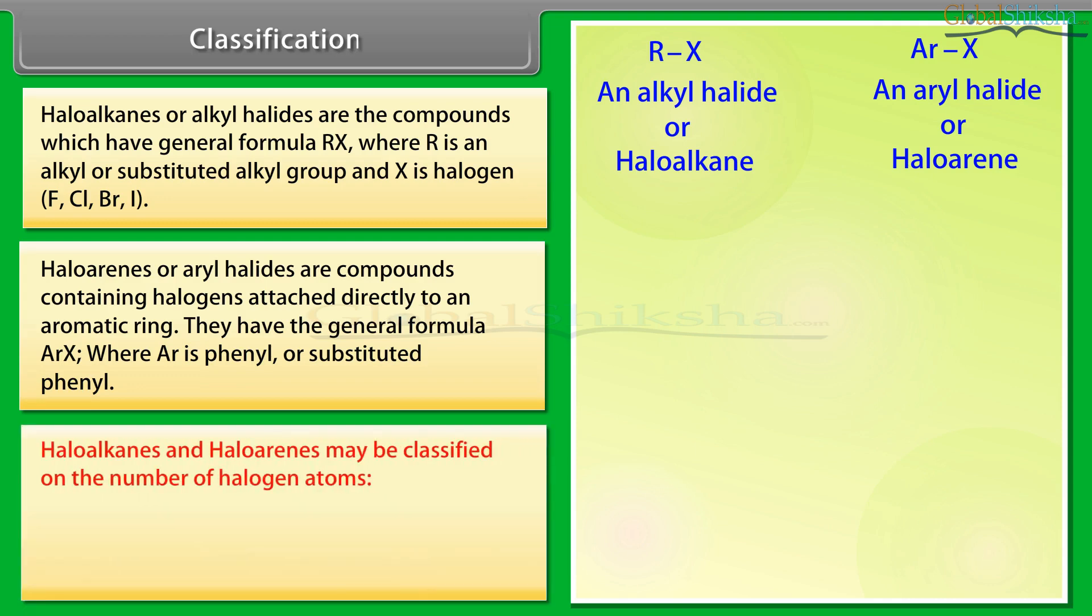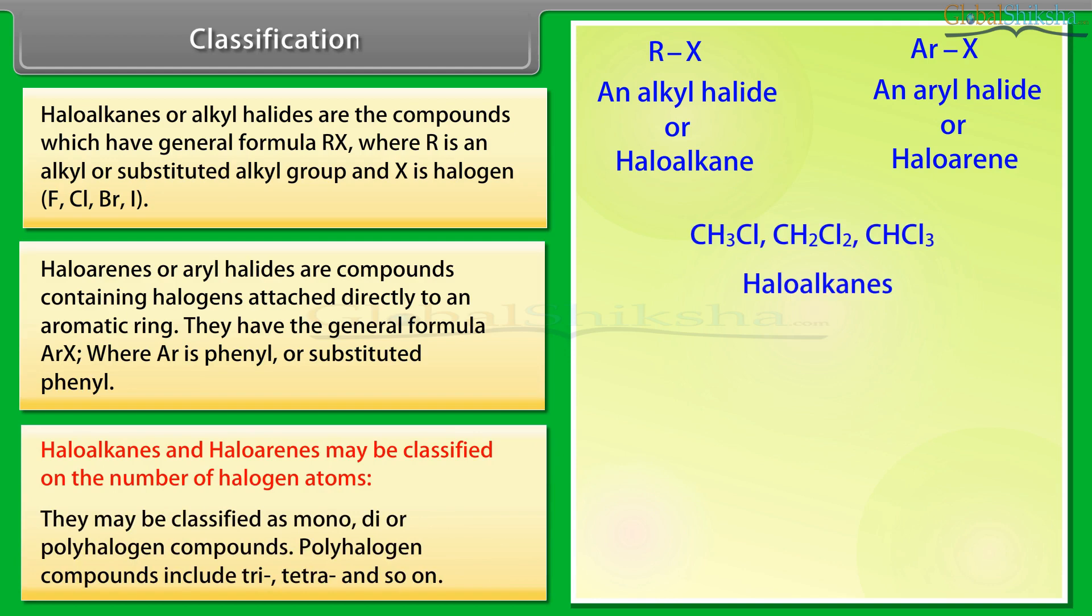Haloalkanes and haloarenes may be classified on the number of halogen atoms. They may be classified as mono, di or polyhalogen compounds. Polyhalogen compounds include tri, tetra and so on.